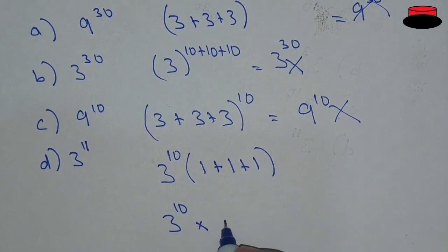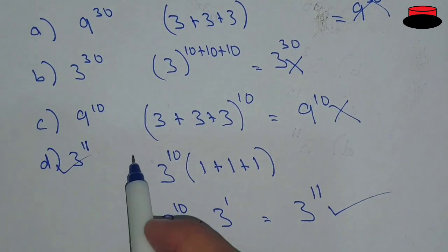So we have 3^10 × 3. No power means power 1. When the bases are the same, the powers are added. So the answer is 3^11. I hope you understand. Thank you for watching this video.